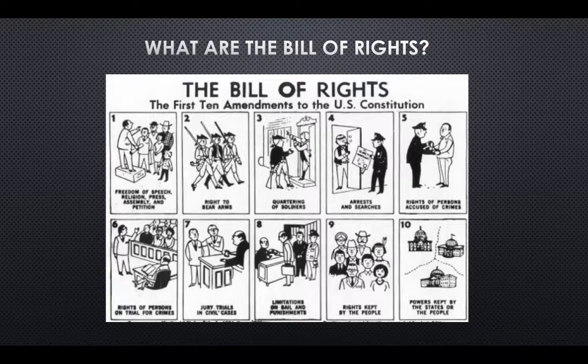As shown in this visual, here is what the Bill of Rights are. The first amendment is freedom of speech, religion, press, assembly, and petition. The second amendment is the right to bear arms.